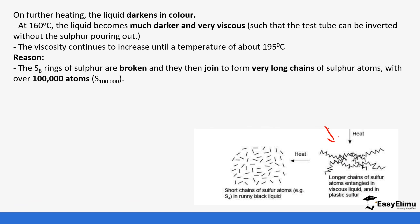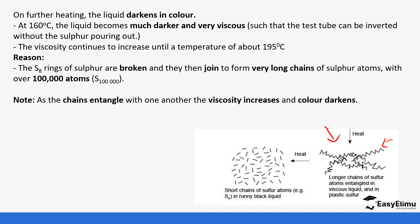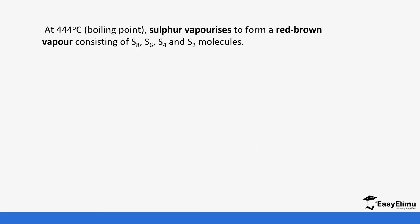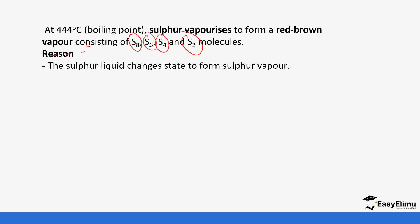The reason viscosity increases is that the S8 rings are broken and join to form very long chains of sulfur atoms — over 100,000 atoms — which entangle with one another, causing the liquid to darken and become viscous. Near the boiling point the liquid becomes less dark, turning red-brown and more mobile, because the long chains break into shorter chains. At 424°C sulfur vaporizes as small molecules are given off.